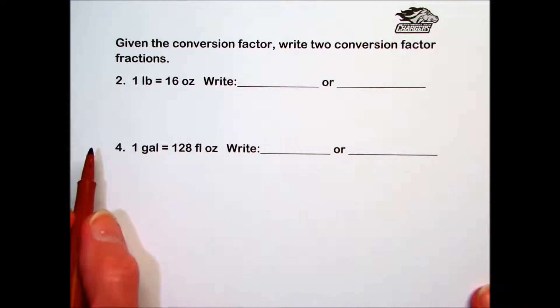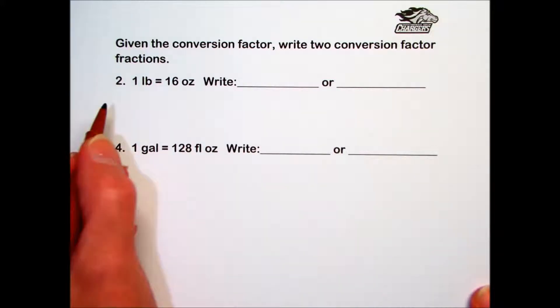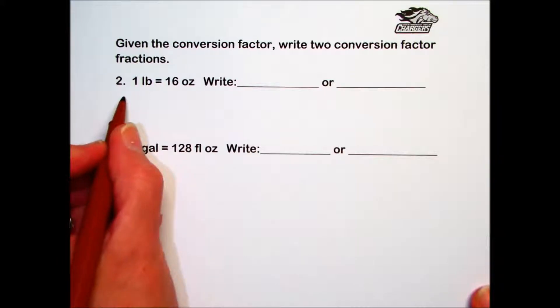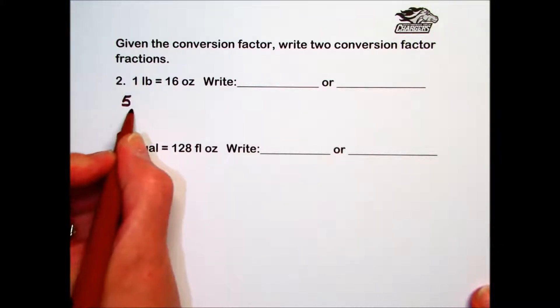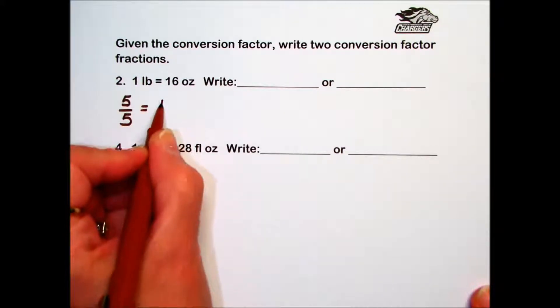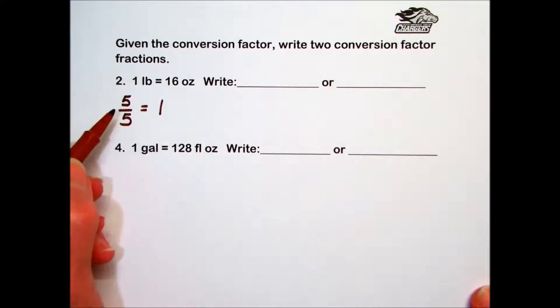To write this conversion factor fraction, it's based on the property that any time you have the same thing over the same thing, we know it to be equal to 1. For example, 5 over 5, or 5 divided by 5 equals 1.